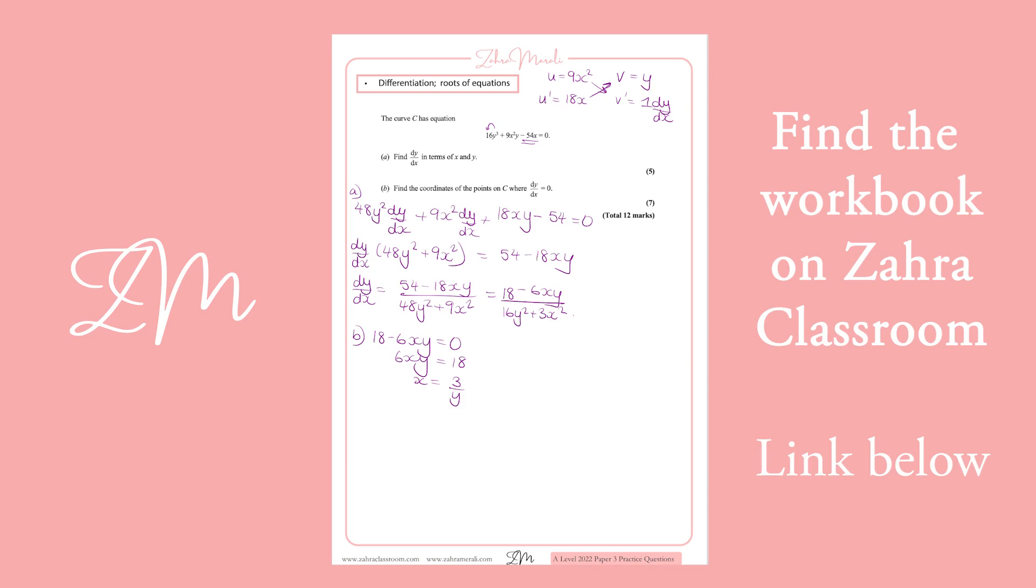I'm going to substitute it into the beginning equation. So I get 16y³ + 9(3/y)²·y - 54(3/y) = 0. Now I'm going to let you clean that all up. If you have any problems, let me know. But you should end up with 16y⁴ + 81 - 162 = 0.